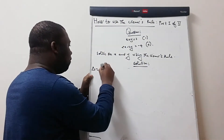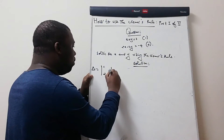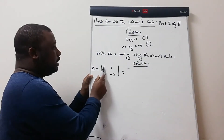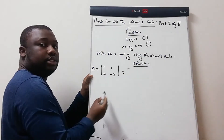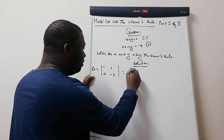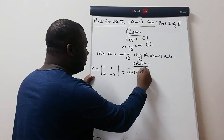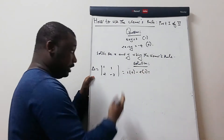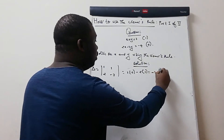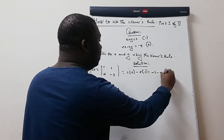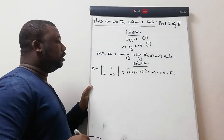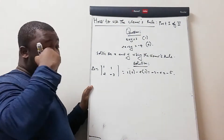We have 1 and 2 for the x-coefficients, and 1 and −3 for the y-coefficients. Applying the rule — this times this minus this times this — we get: 1 times −3 minus 2 times 1, which gives us −3 minus 2, equal to −5. So Delta = −5.